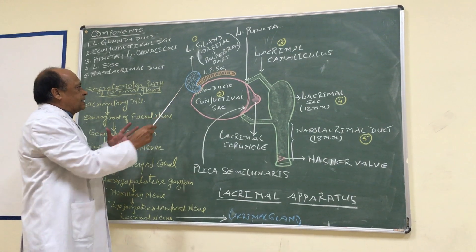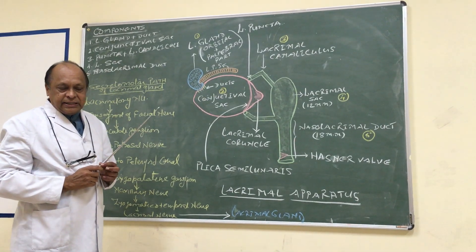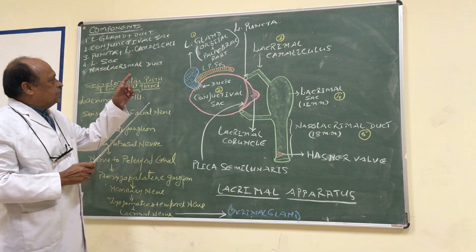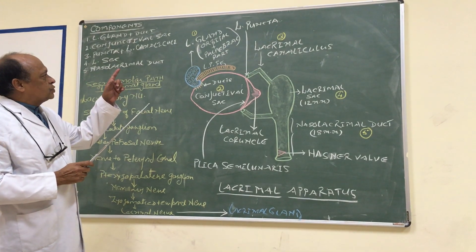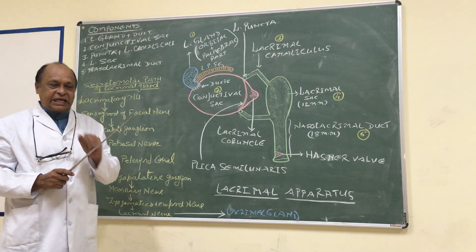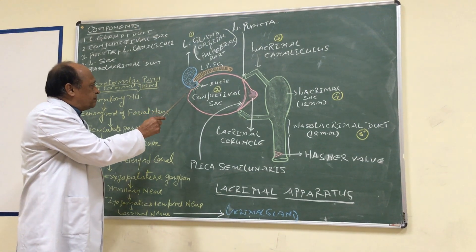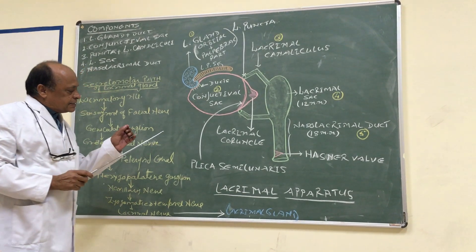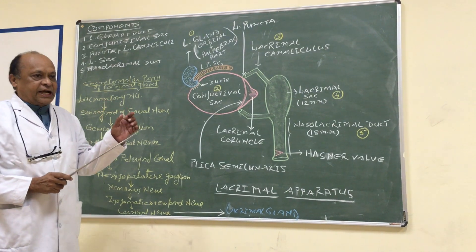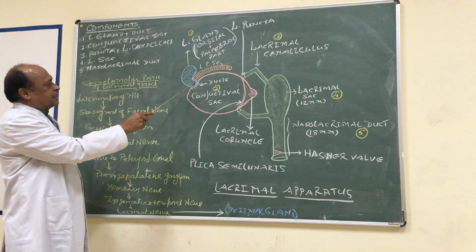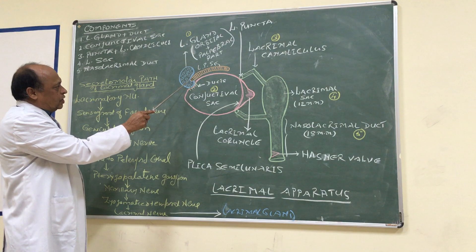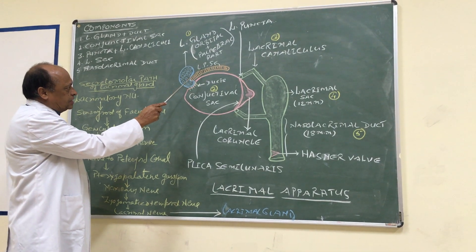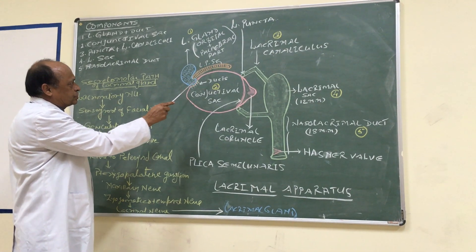The orbital part lies in the lacrimal fossa, which is situated in the anterior superior part of the orbital cavity. The palpebral part, as the name indicates, lies in the lateral part of the upper eyelid. These two parts continue with each other along the lateral margin of the levator palpebrae superioris muscle.